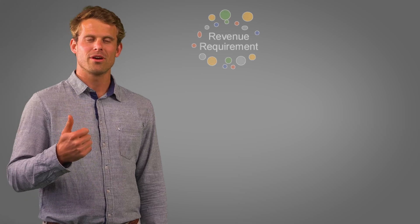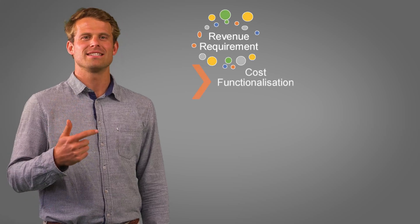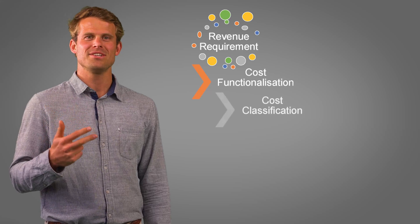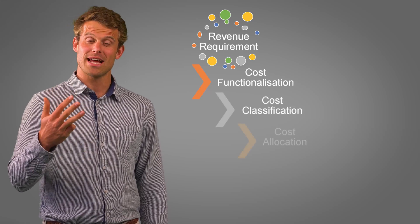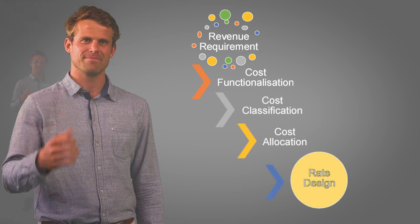NERSA's cost of supply framework consists of five key steps: revenue requirement, cost functionalization, cost classification, cost allocation, and rate design.